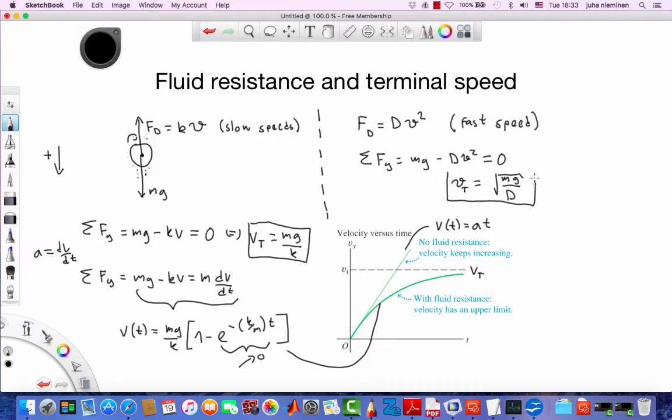And one such example when this formulation is useful is for example a skydiver that is falling from an airplane and the terminal velocity in that case is about 200 kilometers per hour. And that value again changes or depends on the D and D changes according to the shape and the size of the object like we saw in the slow speed model as well.